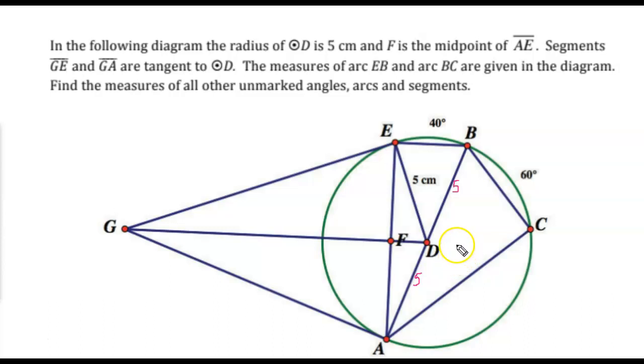I also know that F is the midpoint of AE. By definition of a midpoint, I end up with two congruent pieces. So whatever EF ends up being equal to, AF is going to be equal to the same thing. Segments GE and GA are tangents, which means any of the radii that go to those points of tangency are creating 90 degree angles.